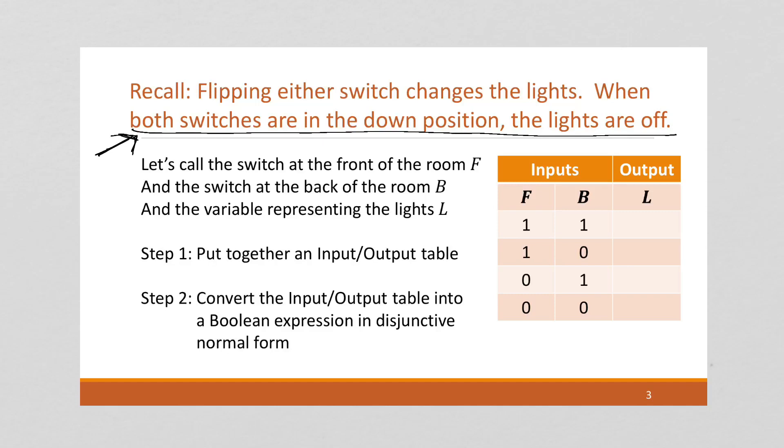We're going to need to use this fact that when both switches are in the down position, the lights are off. Well what row on our input-output table has both switches in the down position? This last row. Right? So when both switches are off, the lights are going to be off.